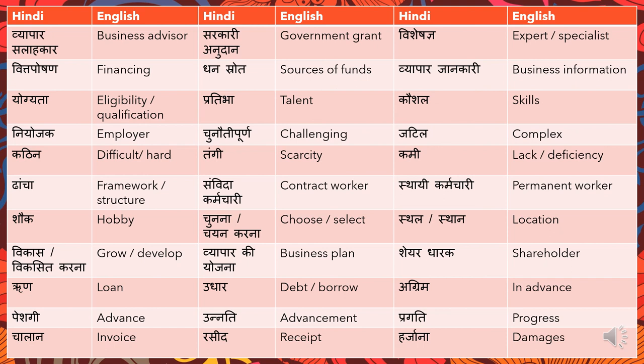'Unnati' means 'advancement' or 'progression.' 'Pragati' means 'progress.' 'Chalan' means 'invoice' or 'receipt.' 'Harjana' means 'damages.' These are the next set of words I came across in a business context. I hope you are able to catch up to these words and study them for your examination. All the best guys, see you soon.